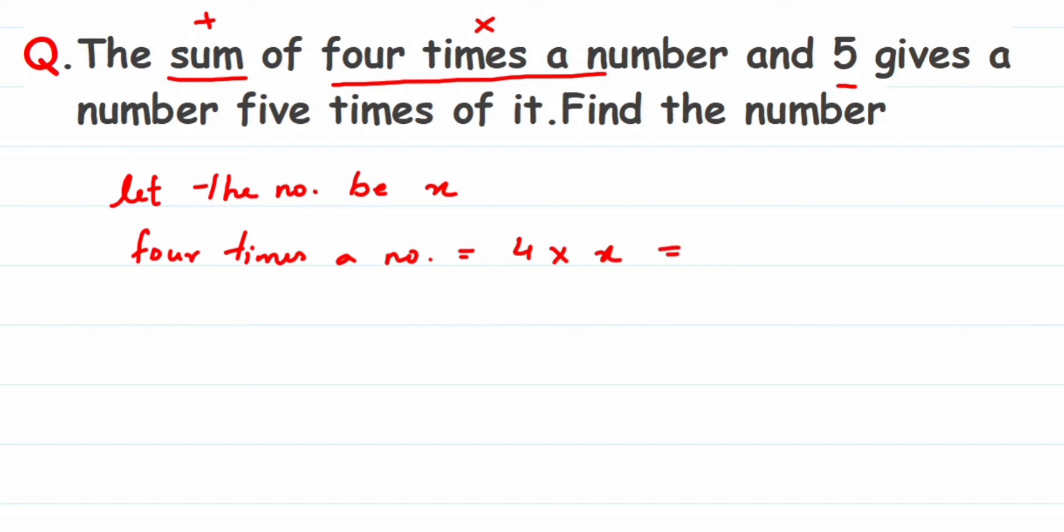So we got four times a number. Here they're doing the sum of four times a number and five, so we have to add this 4x and 5. We have done one part of the equation. Now what they're saying: when we add this four times a number and five, it gives five times of it.